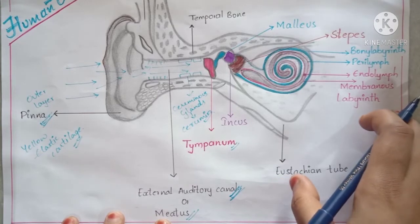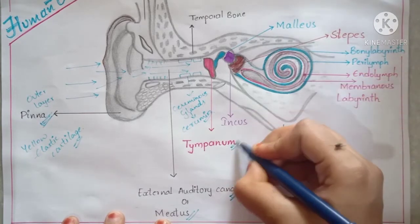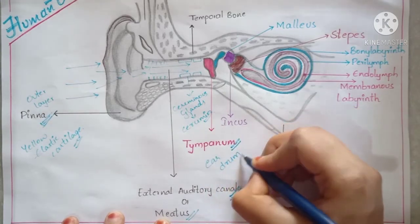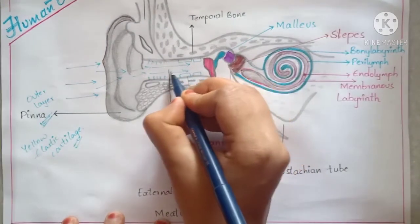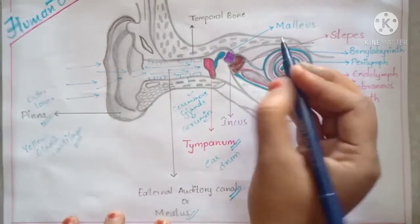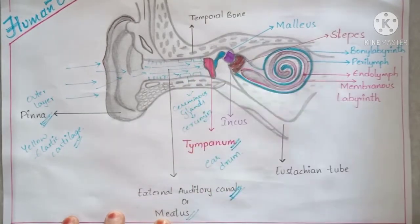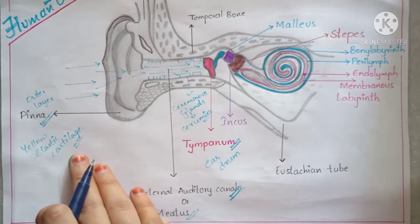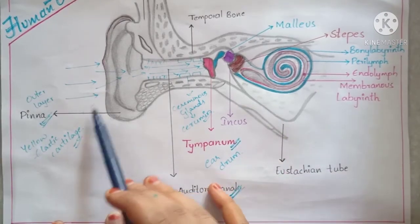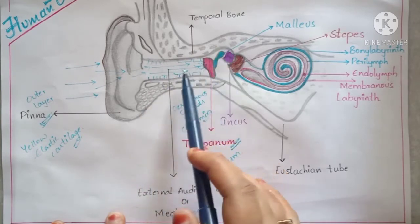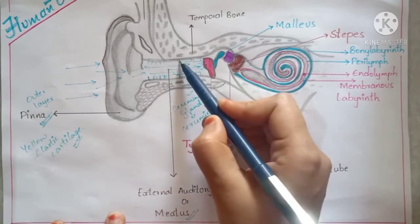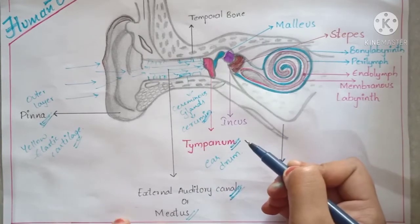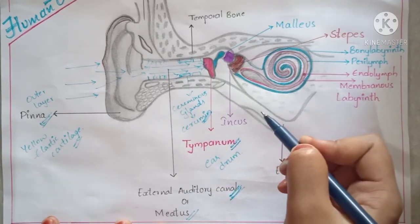The last part of the external ear is the tympanum, also known as the eardrum. When sound waves enter through the pinna and travel through the auditory canal, they strike the tympanum. To summarize the external ear: the pinna is made up of yellow elastic cartilage; the auditory canal has small hair-like structures and ceruminous glands that secrete cerumen, which stops bacteria from entering the ear.